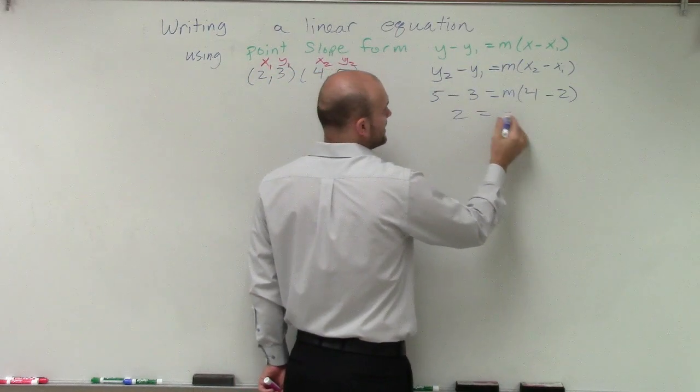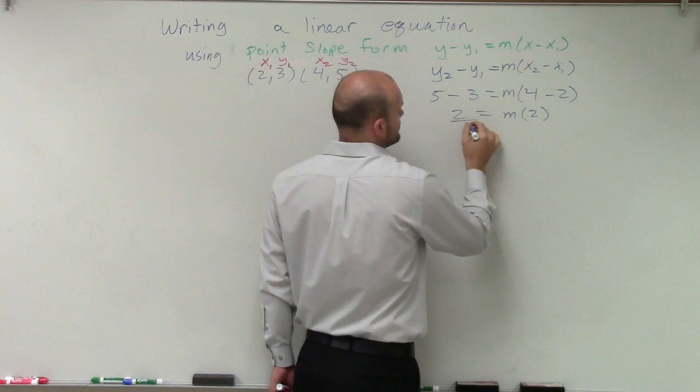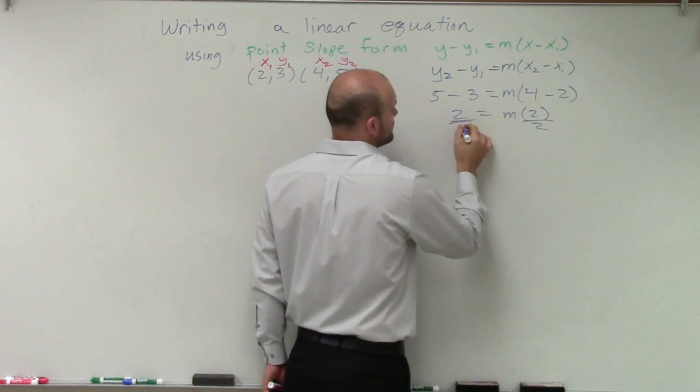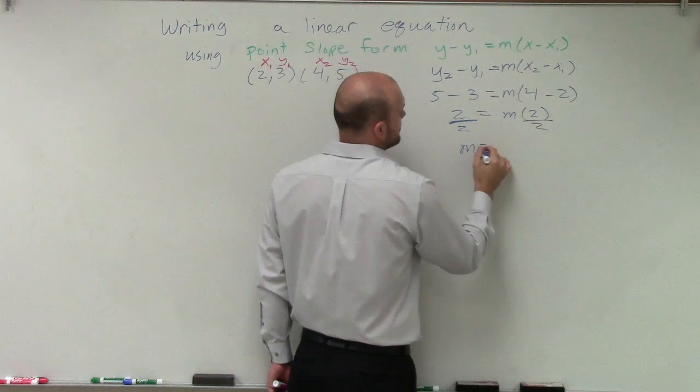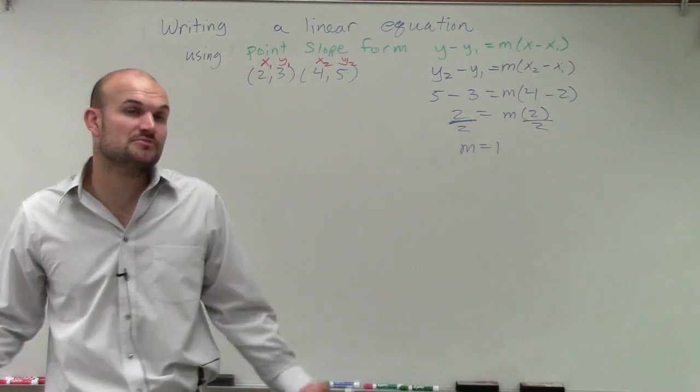So therefore, we have 2 equals m times 2. Divide by 2. So we could say m equals 1. Therefore, the slope of this equation is going to be 1.